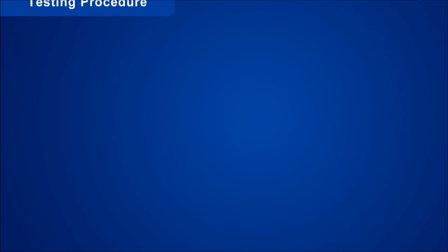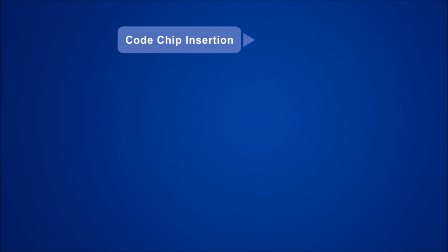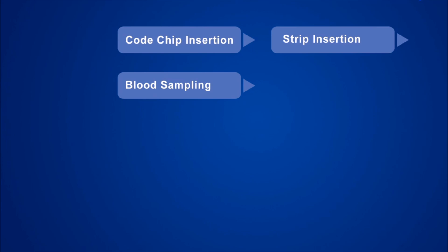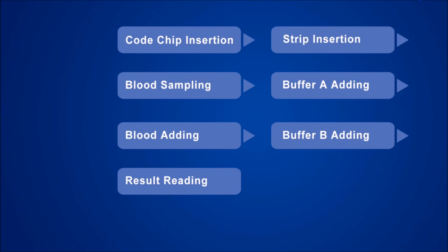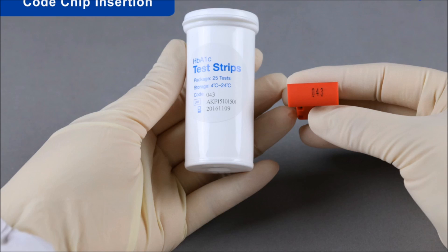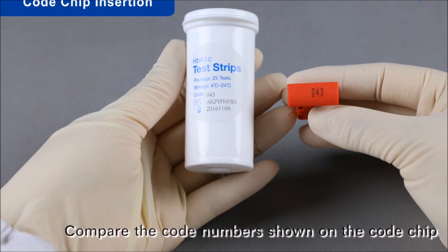The testing procedure consists of the following steps: code chip insertion, strip insertion, blood sampling, buffer A adding, blood adding, buffer B adding, result reading, and code chip insertion.